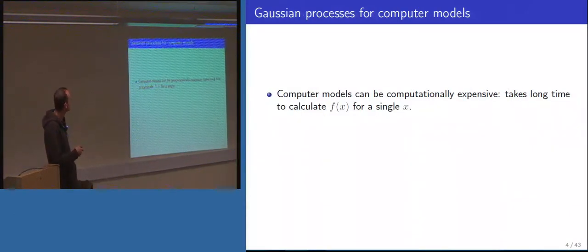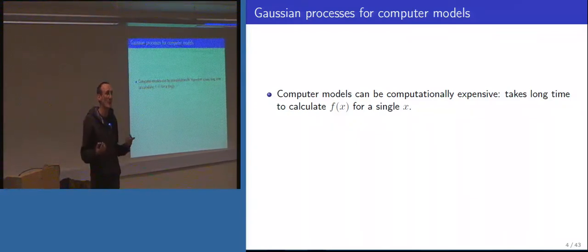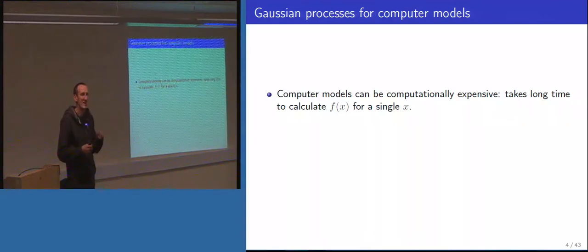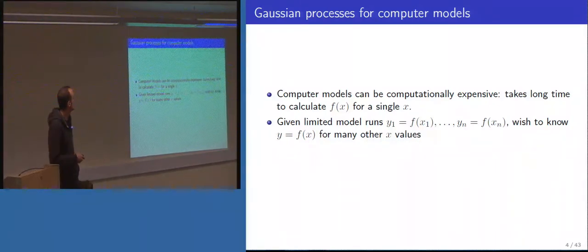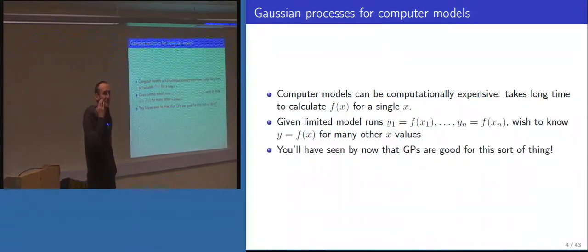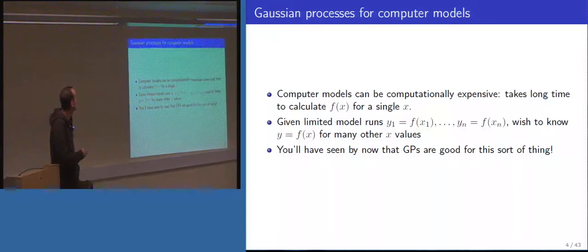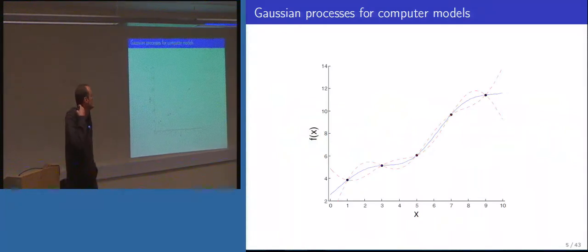So where does the Gaussian process fit in? Often these models are computationally expensive — a single run observing your output once at one input x takes non-trivial amounts of computing time. The idea is you can only afford a limited number of model runs, so you choose some input values and observe some outputs, but you'd like to know the output at many other input values. This falls naturally into the territory of Gaussian process modelling: inference for a function given limited observations.